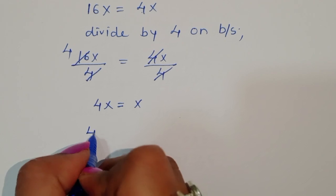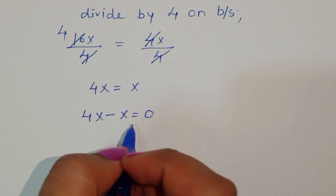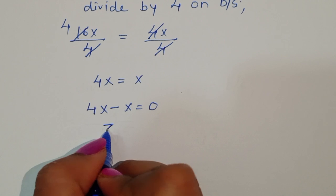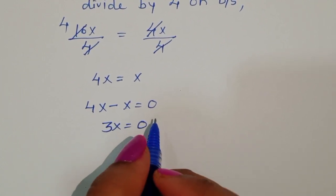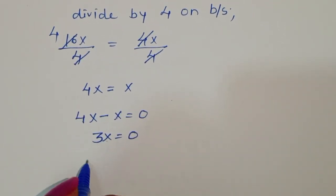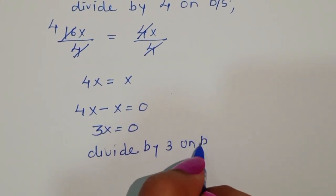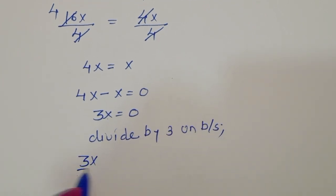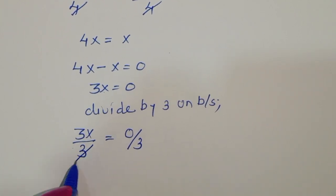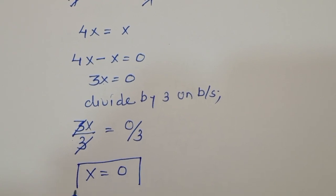We can write this as 4x minus x is equal to 0. Now 4x minus x is 3x, so 3x is equal to 0. We divide both sides by 3 to cancel it, and we get x is equal to 0.